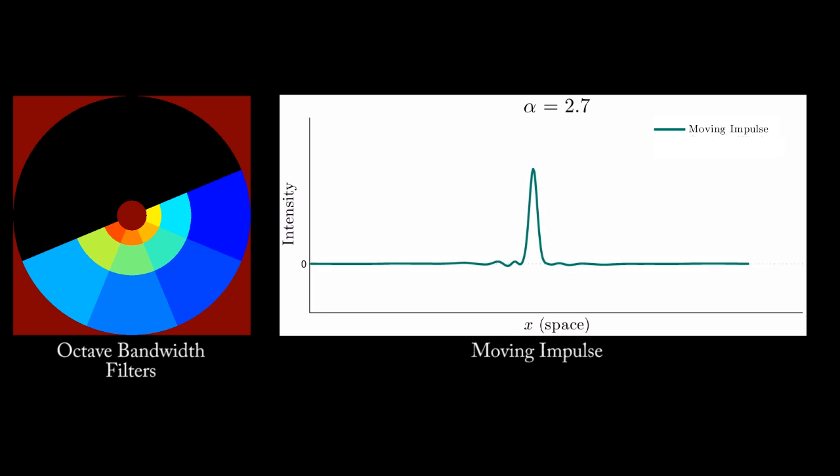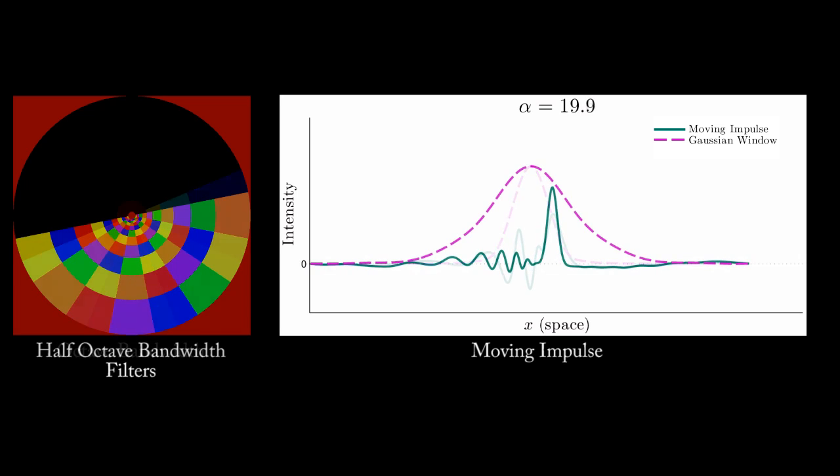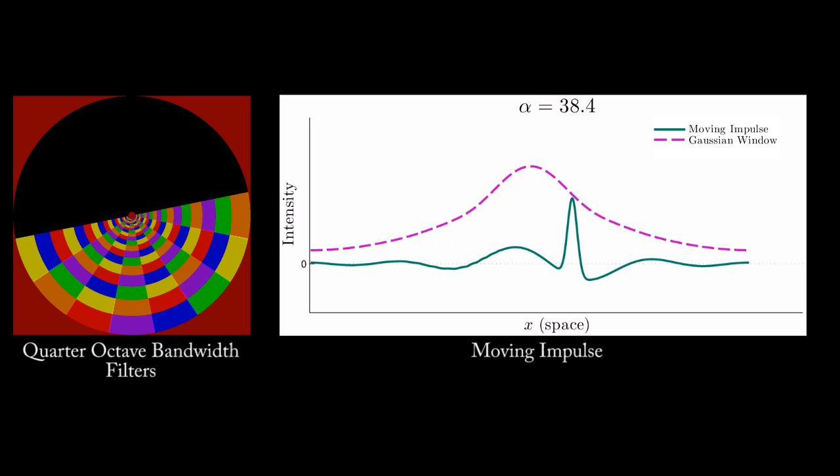The representation we use determines the maximum magnification possible. With an octave bandwidth pyramid, the magnification of the impulse is limited because it is attenuated by its Gaussian window. We can deal with this artifact by using a half-octave pyramid. This results in a wider spatial support for the filter. We can widen it further with a quarter-octave pyramid.